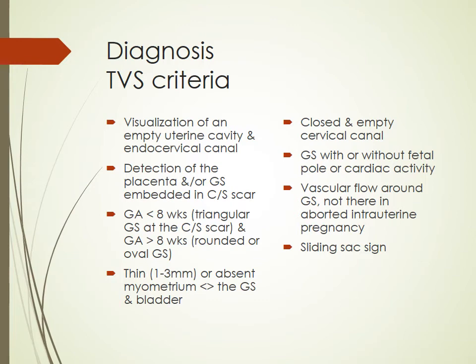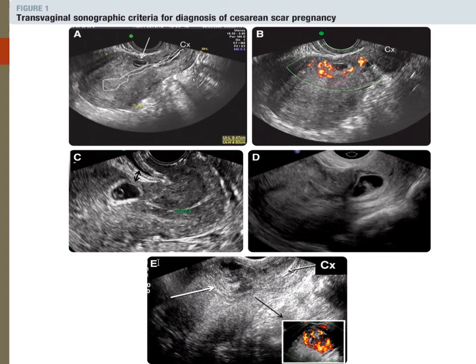These pictures demonstrate the key ultrasound findings. Picture A shows the cervix which is completely empty, and the uterine cavity which is empty, with a small gestational sac sitting at the caesarean scar area. Picture C shows this more clearly, also with measurement of the remaining myometrial thickness. Picture B demonstrates the increased vascularity around the gestational sac, which would be absent in the case of an aborting intrauterine pregnancy.